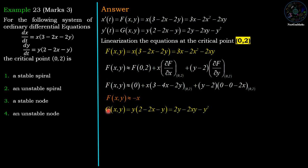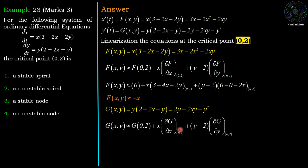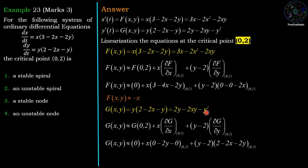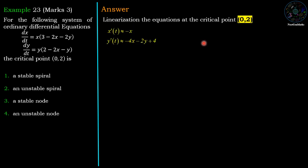Similarly, we approximate g(x, y) with its linear form at (0, 2) using the Taylor series up to the first derivative. Evaluating g(0, 2): putting x = 0, y = 2 gives 4 − 0 − 4 = 0. The partial derivative of g with respect to x is −2y, evaluated at (0, 2) gives −4. The partial derivative of g with respect to y is 2 − 2x − 2y, evaluated at (0, 2) gives −2. So the linear approximation is g(x, y) ≈ −4x − 2(y − 2), which simplifies to −4x − 2y + 4.